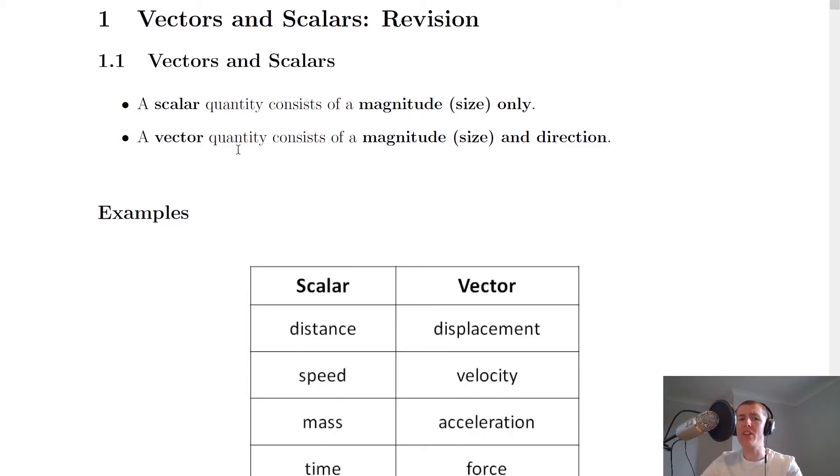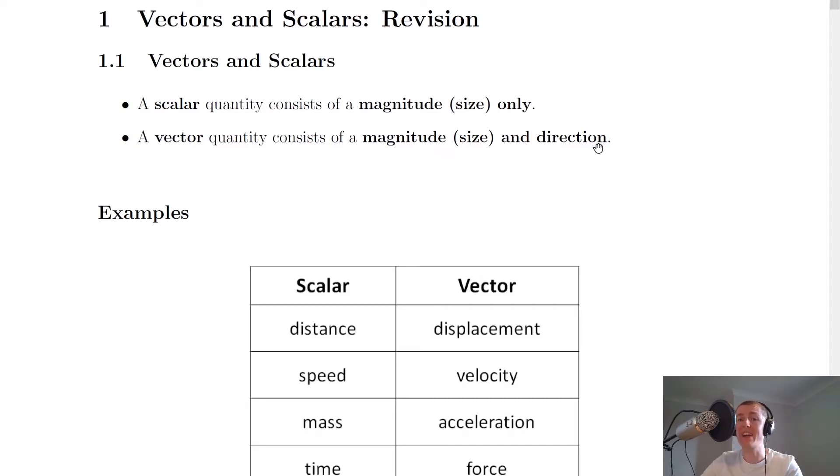So magnitude is just a fancy word for size. And a vector on the other hand is a quantity that consists of a magnitude, a size and a direction. So to make a bit more sense of this let's look at some examples.